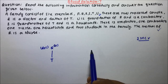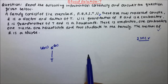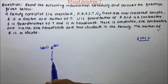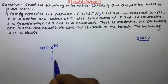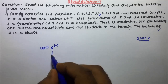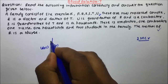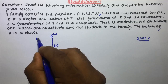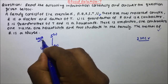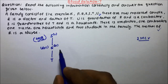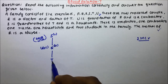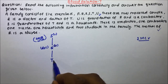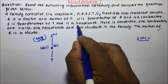The next line is: U is grandfather of R and is a contractor. S is grandmother of T. So grandmother means T's father's mother will be T's grandmother. S is grandmother of T and is a housewife. So here, T's father is Q, and Q's mother will be S because S is the grandmother of T. S is a housewife.